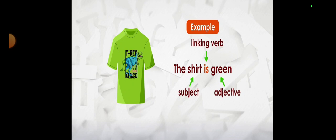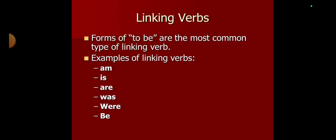Let me take one more example: 'The shirt is green.' Is there any action going on? No. It is just a link shown with the help of the linking verb — the subject is being connected with the complement, which is in the form of an adjective. Hopefully you are getting it.